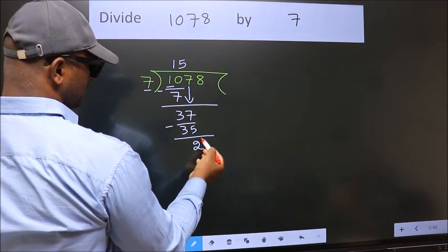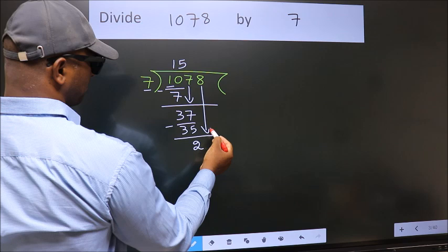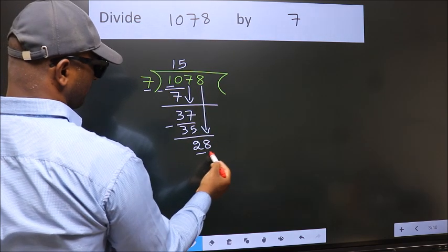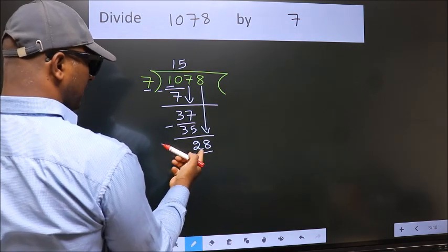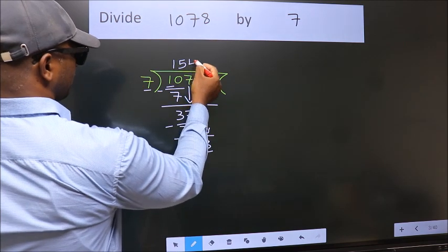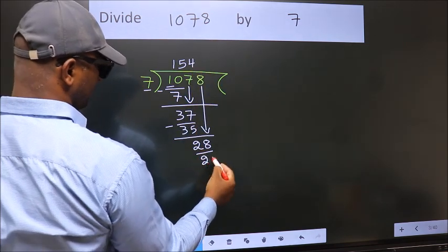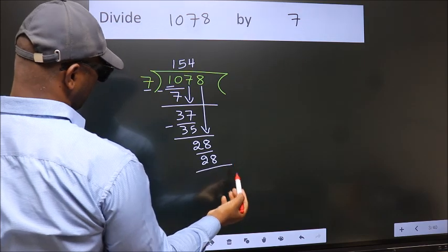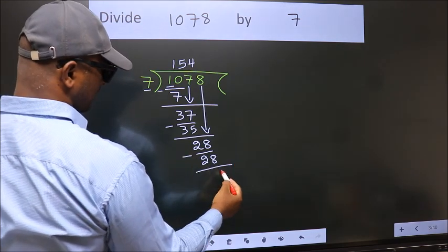After this, bring down the beside number. 8 down, so 28. When do we get 28 in the 7 table? 7 fours 28. Now we subtract. We get 0.